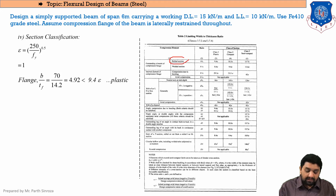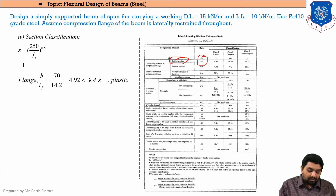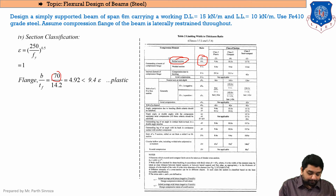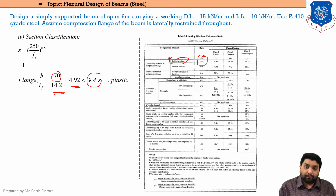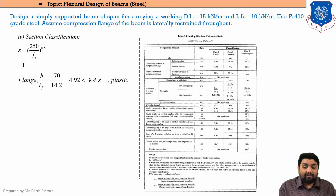For the flange (outstand element, rolled section), the ratio checked is B/TF = (BF/2) / TF = 170 / 14.2 = 4.92. This is less than 9.4ε, so the flange is classified as a plastic section. For the web, the ratio D/TW is checked next.